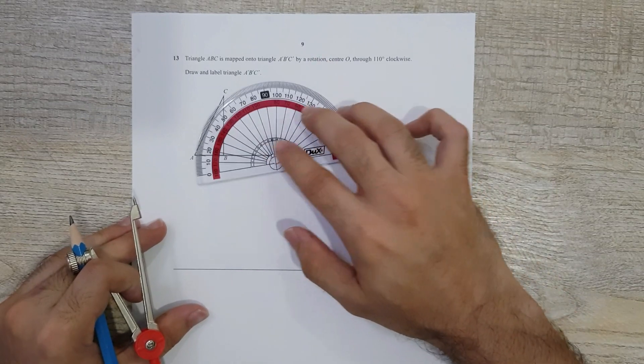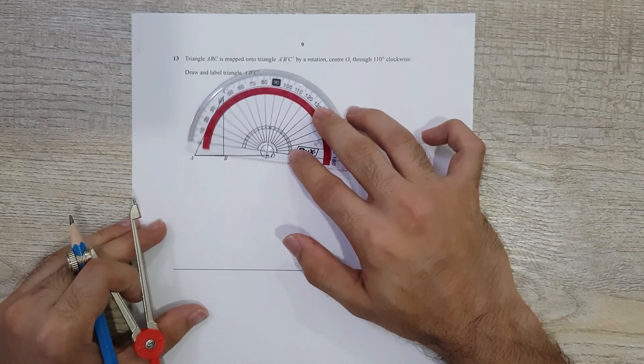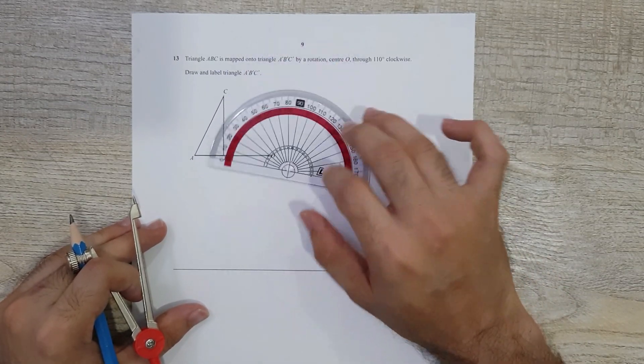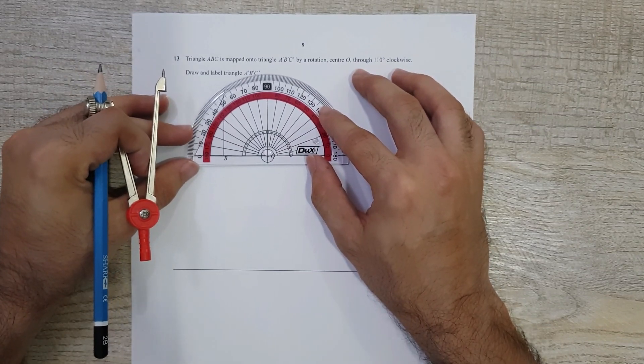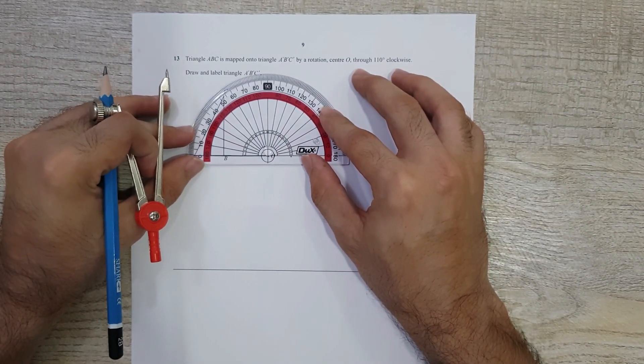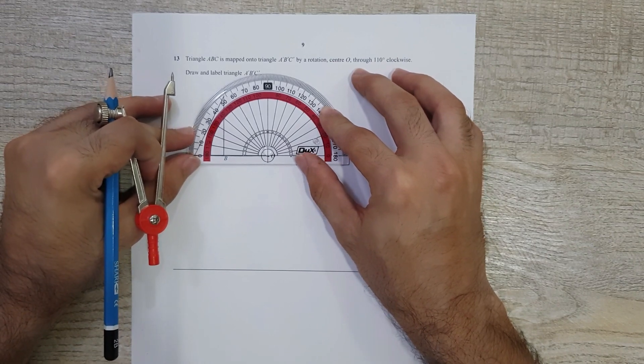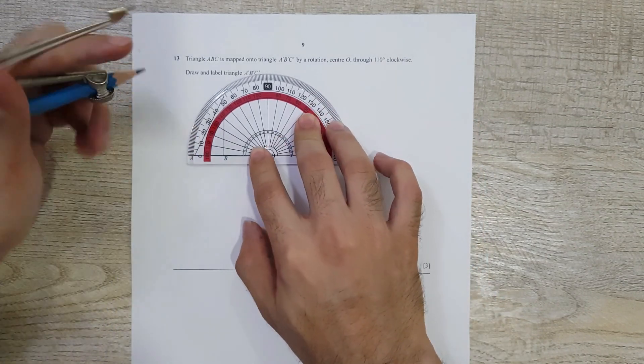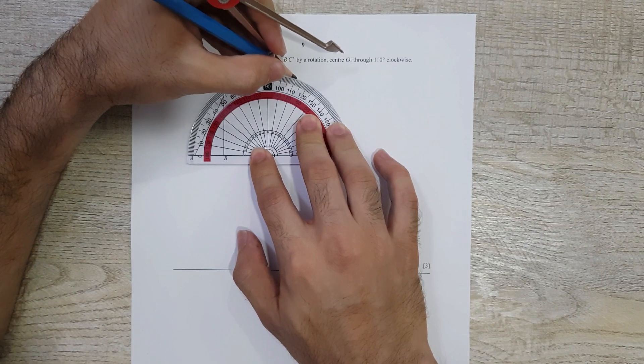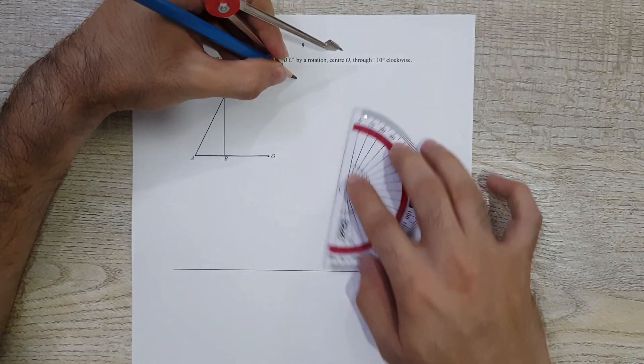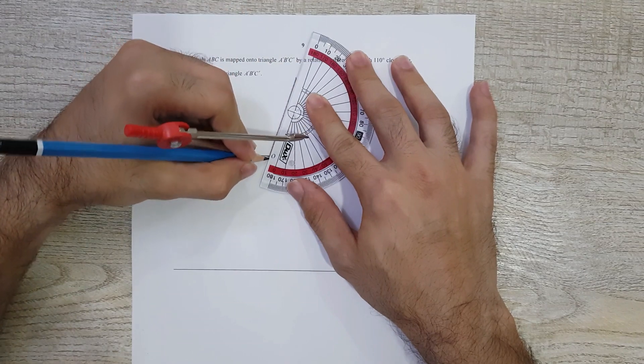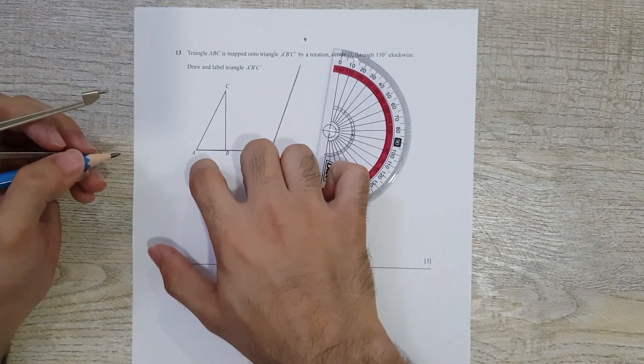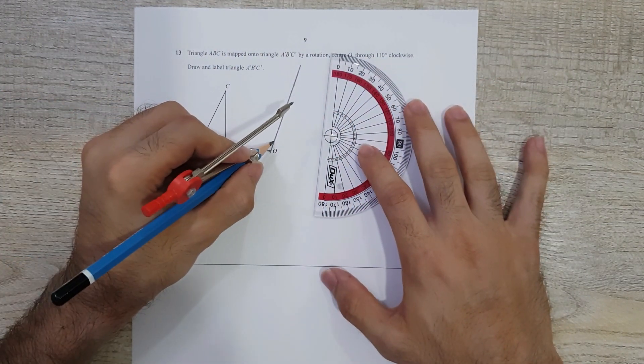These two points are going to get rotated 110 degrees clockwise. So this is my center, and from this I'm going to measure 110 degrees. 110 has got to be somewhere over here—it's an obtuse angle—so I'm going to make a line. This tells me that the two points A and B are on this line somewhere.